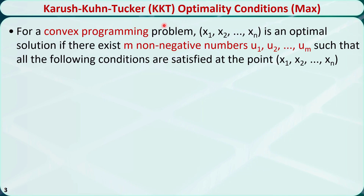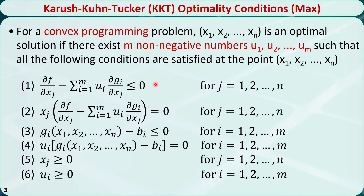KKT conditions can be used to determine the optimality of a partial solution for convex programming problems. Sometimes we can also use the KKT conditions to find the optimal solutions. For a convex programming problem, x1, x2 through xn is an optimal solution if there exists m non-negative numbers u1, u2 through um such that all the following conditions are satisfied at the optimal point. These are called the KKT conditions.